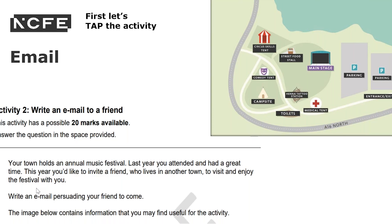So you're writing an email to a friend. Your town holds an annual music festival and last year you attended and had a great time. This year, you'd like to invite a friend who lives in another town to visit and enjoy the festival with you. You will write an email to persuade your friend to come, and the image below contains information that you may find useful for the activity.